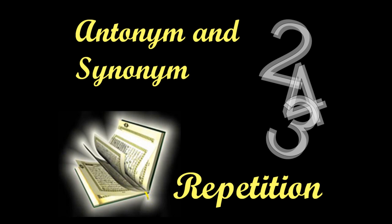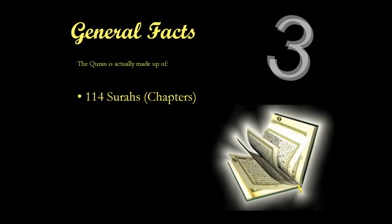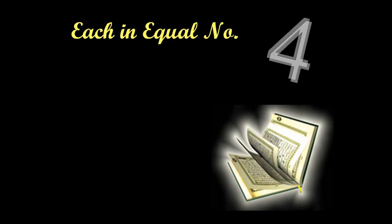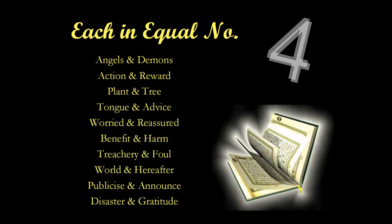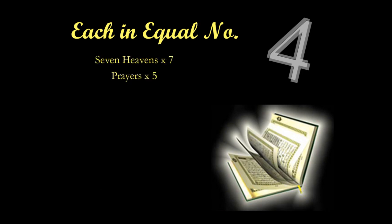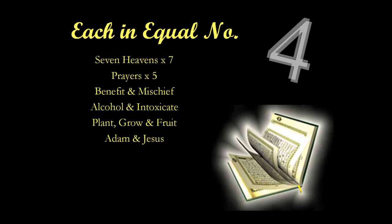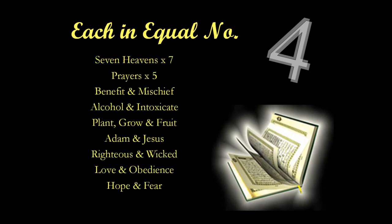Before we go into this, some basic facts about the Qur'an. The Qur'an is made up of 114 surahs or chapters. Each chapter contains verses or ayahs and there are 6,236 in total in the Qur'an, and overall we have 78,257 words in the Qur'an. Interestingly enough, each of the following examples occur an equal number of times in the Qur'an. Some of these are synonyms and some of these are antonyms, and you can actually go back to the Qur'an and test these particular examples.